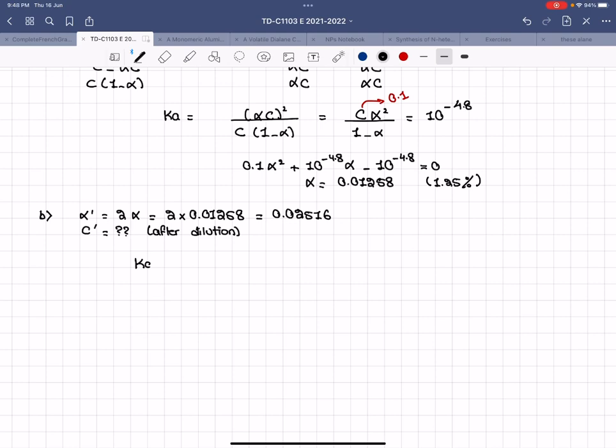To find C prime, you go with Ka, but this time since it's prime, it's basically C prime alpha prime squared divided by 1 minus alpha prime. In this case, you have alpha prime. You have Ka, which is 10 to the negative 4.8. All you have to do is find C prime.